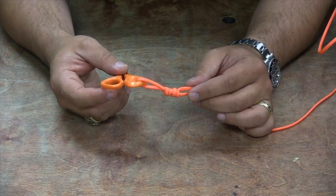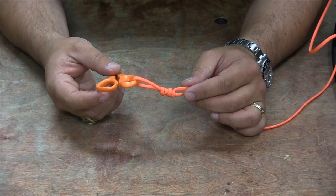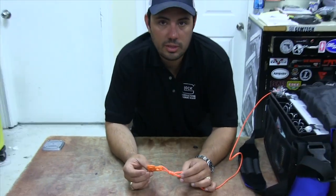You can tie it in the finest two pound tippet all the way up to 100 pound mono, 100 pound fluorocarbon. I've tied it in. It works really well.